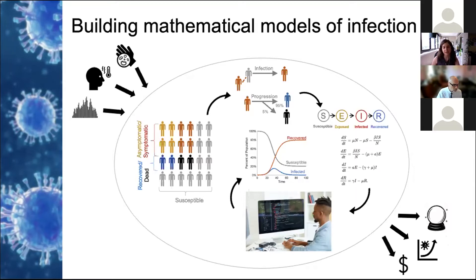While it might seem like building these models is mostly about learning about the virus or bacteria or whatever the infection-causing agent is — which is true and important — we also have to think a lot about the human factors that impact disease spread and infection outcomes. Disease transmission requires direct or indirect contact between people, so disease spread depends on complex patterns of human social behavior. On the clinical side, the severity of infection and health outcomes depend on access to health care, acceptance or adherence to treatments, and pre-existing health status. All the diversity and disparities in human populations can manifest as differences in the risk of infection and the response to it.